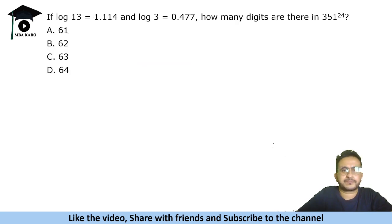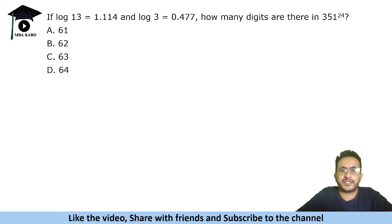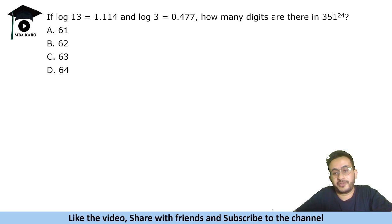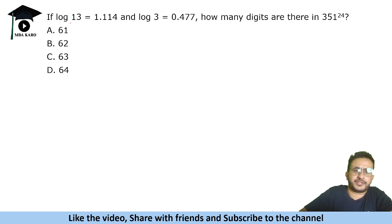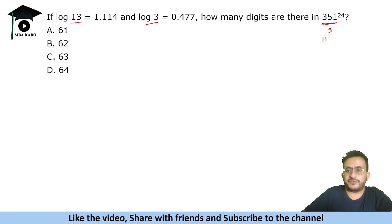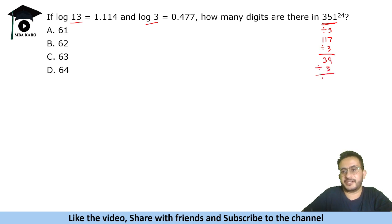Here is another example. Given log 13 = 1.114 and log 3 = 0.477, how many digits are there in 351 raised to the power 24? Things become more complex here. We need to factor 351 using the given values of 13 and 3. Dividing 351 by 3 gives 117; dividing 117 by 3 gives 39; dividing 39 by 3 gives 13. So 351 = 3³ × 13 = 27 × 13.